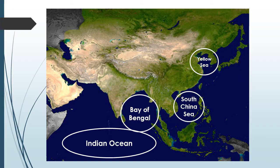Next is the Yellow Sea. It's bordered by northeastern China and North and South Korea. The Huanghe River flows into it. The water is actually yellow because of the minerals that flow into it.